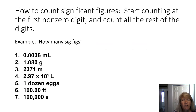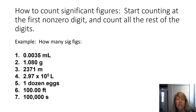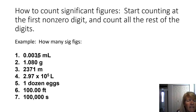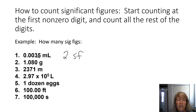The other thing we use significant figures for is in calculations. It's important to look at a number and know how many significant figures it has. The rule is you start counting at the first non-zero digit and count all the rest. For this first number, you don't want to count the zeros that start the number — they're not significant, they're just placeholders. You count the three and the five, so this one has two significant figures.